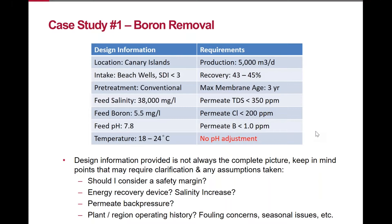Some additional design information: the information provided may not always be the complete picture, so you may need to seek clarification or make assumptions. For example, should you consider a safety margin? When designing a system, exceeding permeate quality requirements typically results in a fine. How much safety margin to use depends on the permeate quality requirements and operating conditions. Another issue: should you consider an energy recovery device, and if it's a pressure exchanger, do you need to account for a salinity increase?